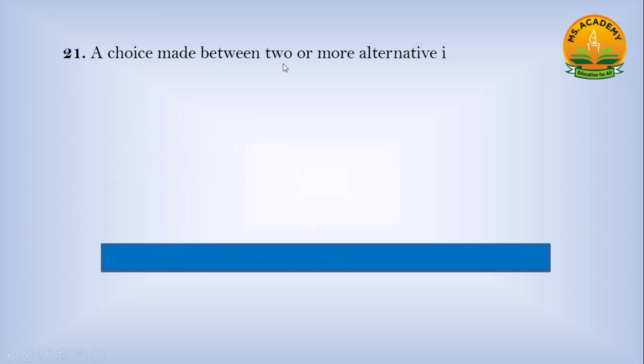A choice made between two or more alternatives is called: Option a) Assumption, Option b) Decision, Option c) Reporting. Answer: b - Decision.